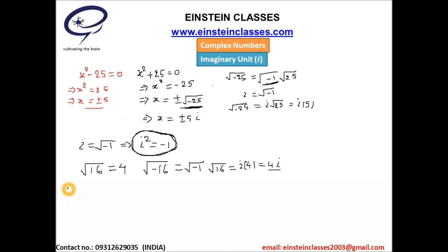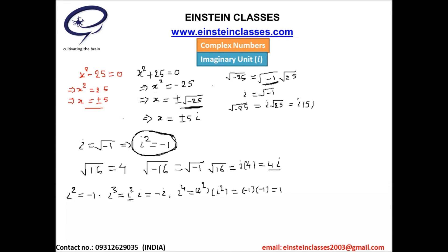Now let's discuss some properties of the imaginary unit i. We know i squared equals minus one. For i cubed, we write it as i squared times i, and since i squared is minus one, i cubed equals minus i. For i to the power 4, we write i squared times i squared, which is minus one times minus one, giving one. So: i squared equals minus one, i cubed equals minus i, and i to the power 4 equals one.